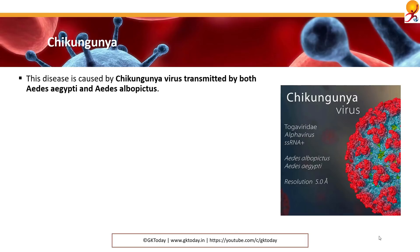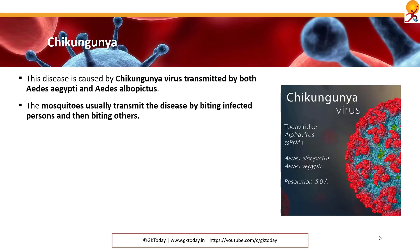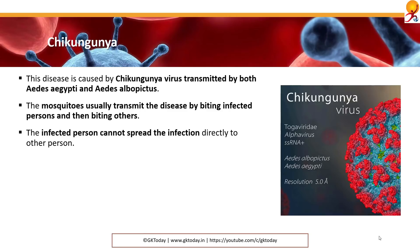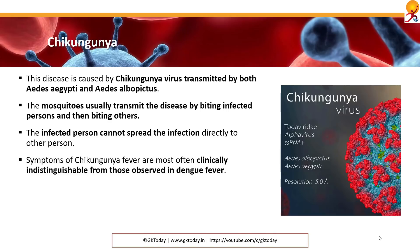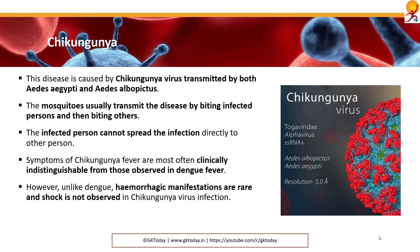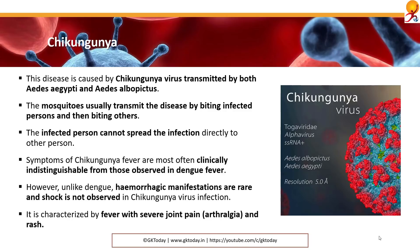Chikungunya is a disease caused by the chikungunya virus and can be transmitted via both Aedes aegypti and Aedes albopictus mosquitoes. These usually transmit the disease by biting infected people and then biting others, quite similar to malaria. The infected person cannot spread the infection directly. Symptoms of chikungunya fever are almost clinically similar to dengue fever, except the platelet count doesn't decrease and shock is not observed. It is characterized by fever with severe joint pain, also known as arthralgia, and rashes.